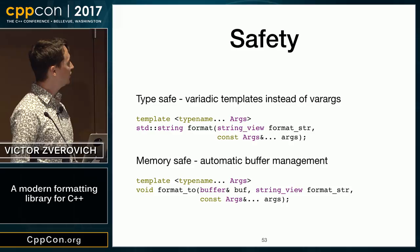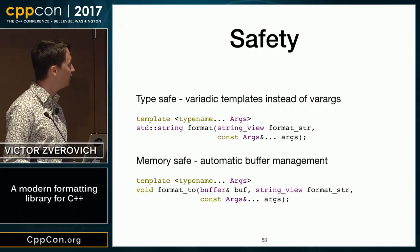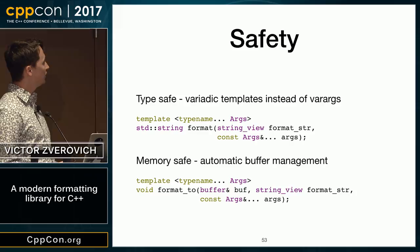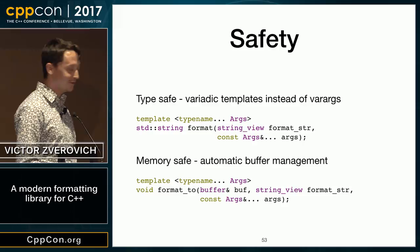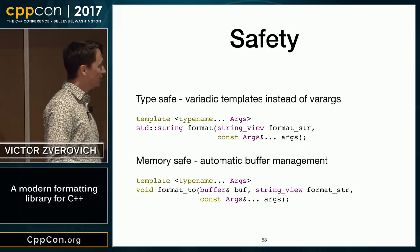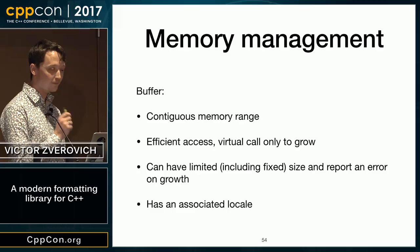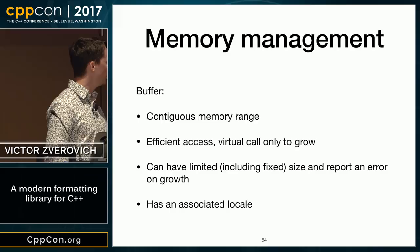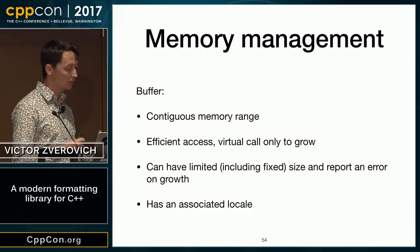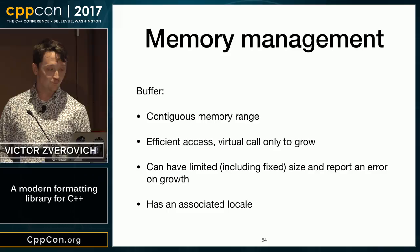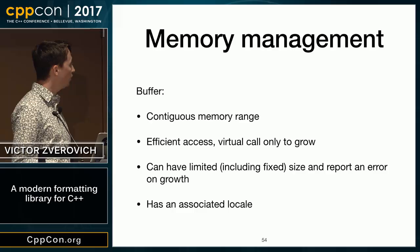The main API function is the format function, which takes a format string and arbitrary arguments and returns an std::string. If you want to be efficient and avoid allocating an std::string, you can use the format_to function, which takes a buffer, a format string, and arguments. Memory management is automatic, which prevents a whole range of errors. The buffer concept represents a contiguous memory range with efficient access with only one virtual function call if you need to grow. It can have limited capacity and report an error on growth, or it can grow dynamically. It also has an associated locale.